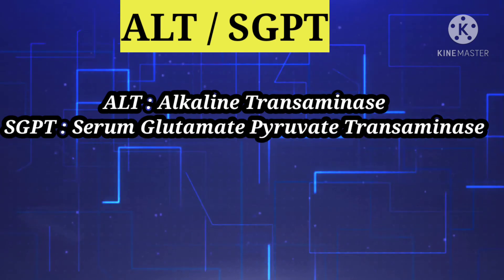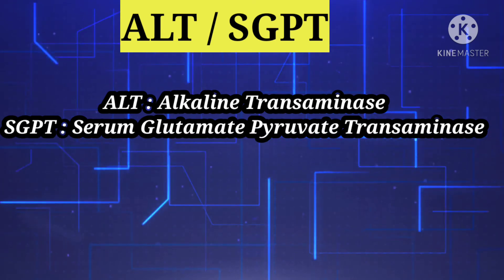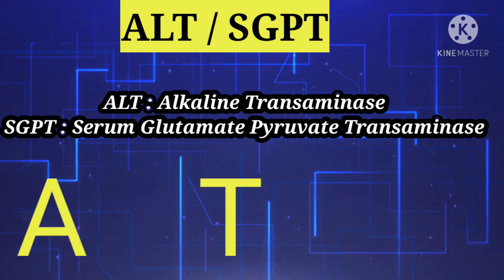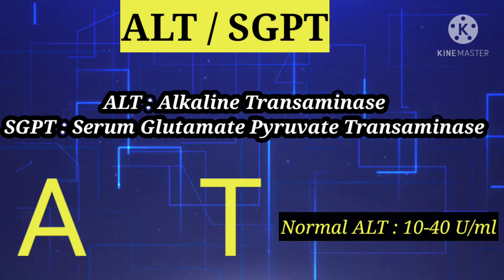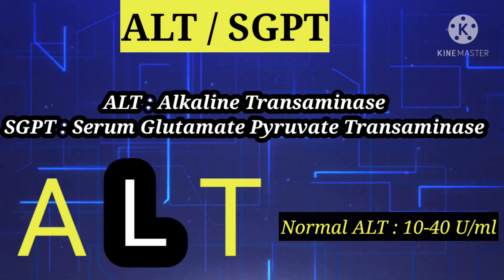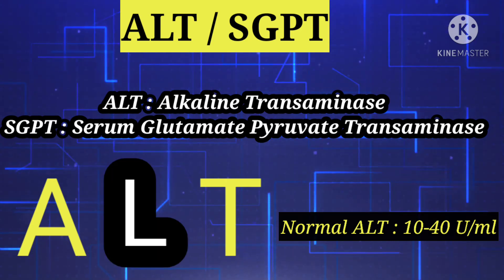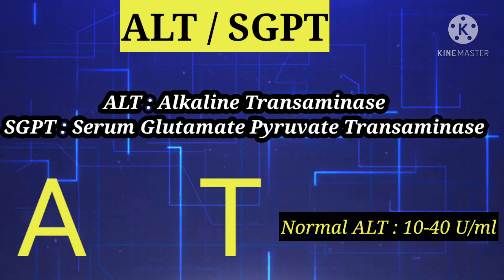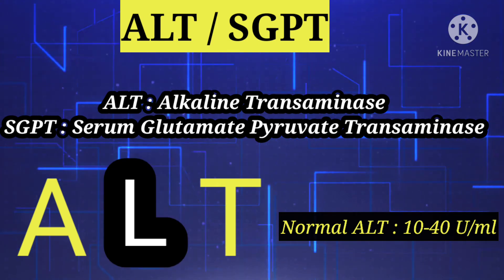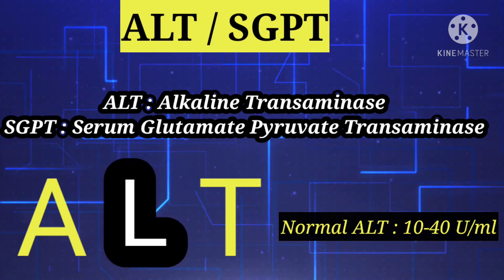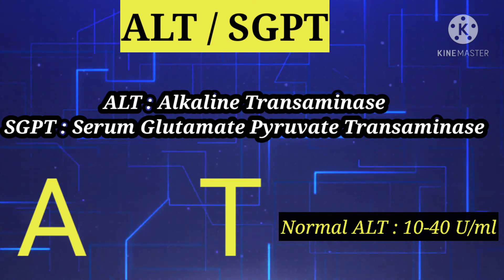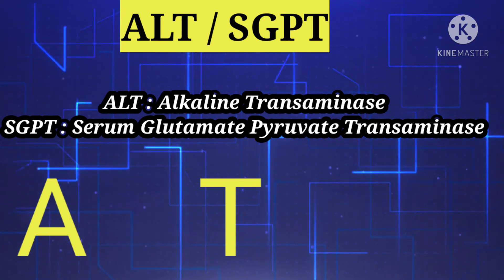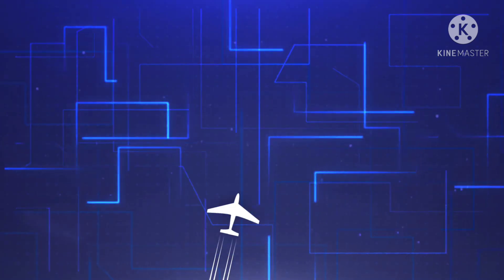ALT, or alanine transaminase, is also called serum glutamate pyruvate transaminase (SGPT). Importantly, ALT is only synthesized by the liver. The normal levels of ALT are 10 to 40 units per ml. If ALT is increased, we consider that there is abnormality in the liver. Certain conditions like malaria and dengue can also cause increased ALT.